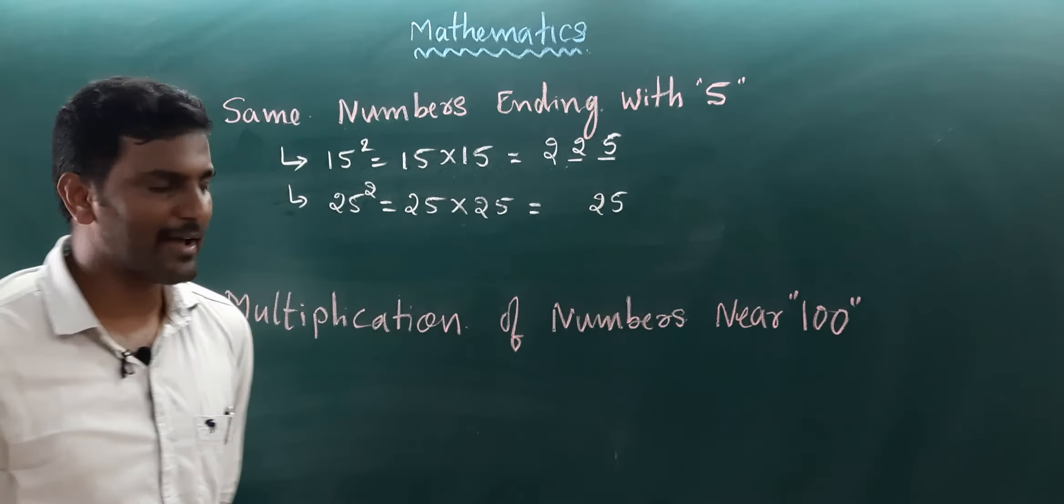There is a 25 square. So what is a 25 square? So 25 we can also written as 25 into 25 and that is equal to, so the last 2 digits are 25 and 2, the next number is a 3. So 2 into 3, absolutely it is a 6. So 6, 25 is an answer. We move on to the next one.